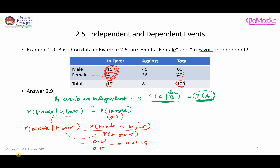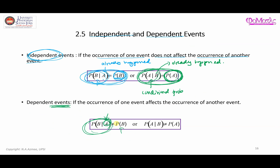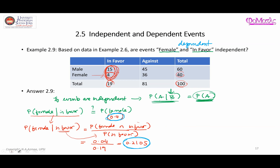Clearly, 0.2105 is not the same as 0.4, and therefore we can say these two events are actually dependent. When the results are not equal, the events are dependent.